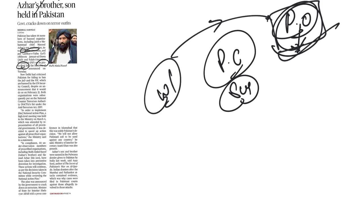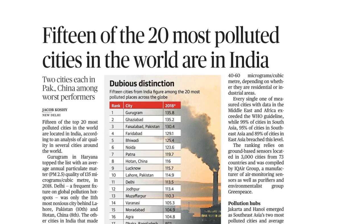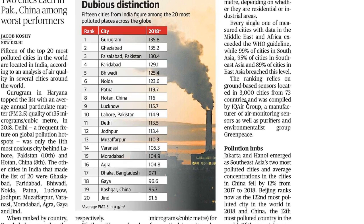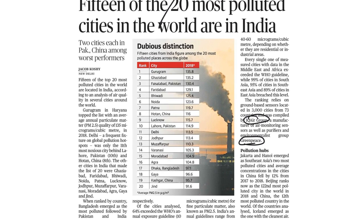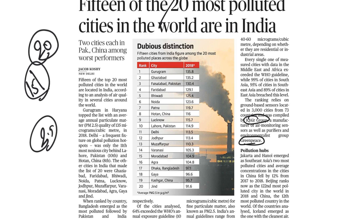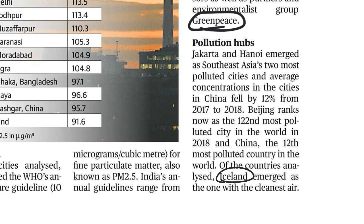The next article: '15 of the 20 Most Polluted Cities in the World are in India,' under GS Paper 3, Environment — air pollution. This ranking is compiled by IQAir Group and Greenpeace. As per this ranking, 15 out of the 20 most polluted cities in the world are from India. The key metric is PM2.5 — the presence of fine particulate matter in the air. Out of all countries, Iceland is ranked as having the cleanest air.